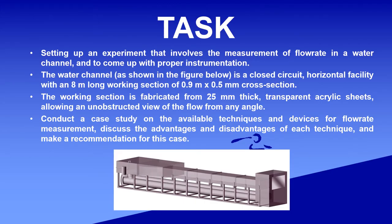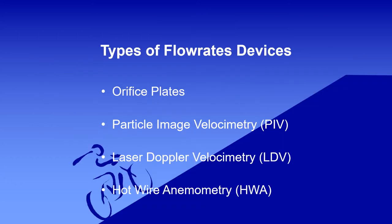This task is about setting up an experiment that involves the measurement of flow rate in a water channel and coming up with a proper instrument. As we can see, this is the water channel — it's a closed circuit and horizontal facility. The working section is fabricated from transparent acrylic sheets, allowing an unobstructed view of the flow from any angle. We have to conduct a case study on the available techniques and devices for flow measurement and discuss the advantages and disadvantages of each technique.